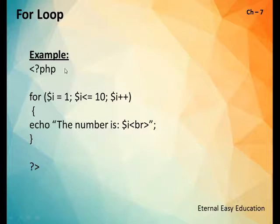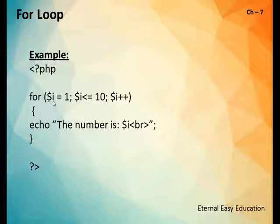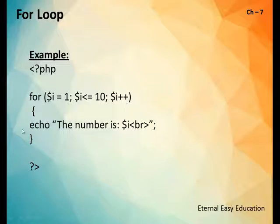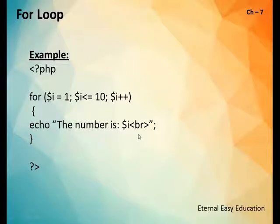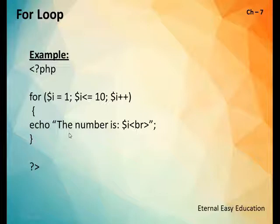Here is an example of a for loop: for open bracket, first initialization — variable $i starts with 1; next condition — i less than or equal to 10; then i++ meaning it increments by one. Within the body of the loop there is one line: echo 'The number is $i' followed by a br tag, meaning the number is printed then the cursor moves to the next line.